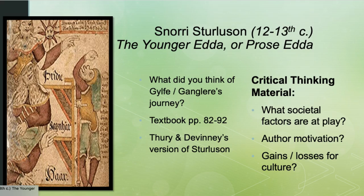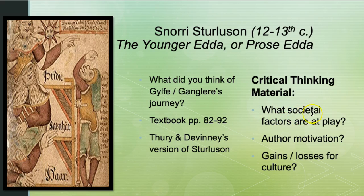A little bit about the text I recommended everyone look at: The Younger Edda, or the Prose Edda, by Snorri Sturluson, written in the 12th to 13th century. For the textbook reading, my scholars would have encountered the legend of King Gelfi, or Gangleri. Some things to keep in mind: what societal factors are at play? What could be the author's motivation? And what gains and losses resulted for the culture? Those are three good questions to always have in mind whenever you're reading literature.